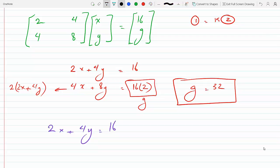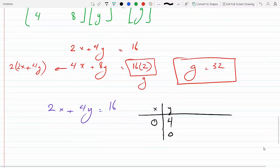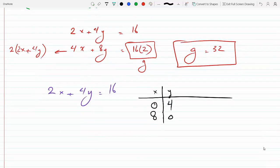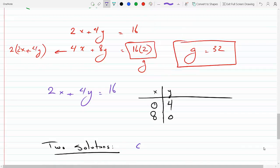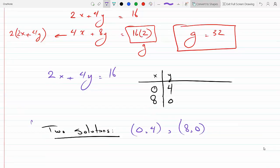You could pick x to be 0, in that case y equals 4, or you could pick y to be 0, and 2x equals 16, so x equals 8. Two solutions would be (0, 4) and (8, 0). You could have chosen something else; I just chose zeros because they're easy to plug in. Any two would do.